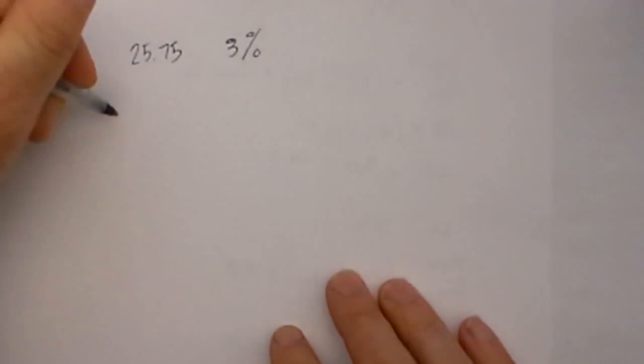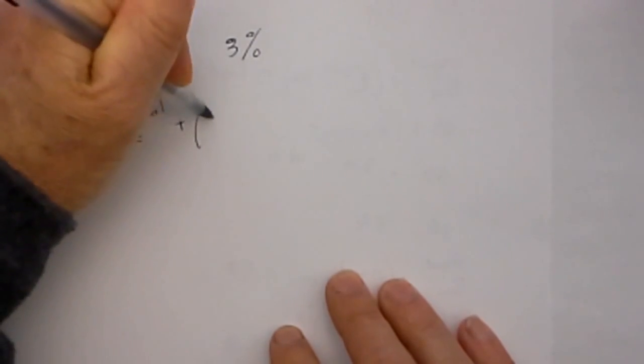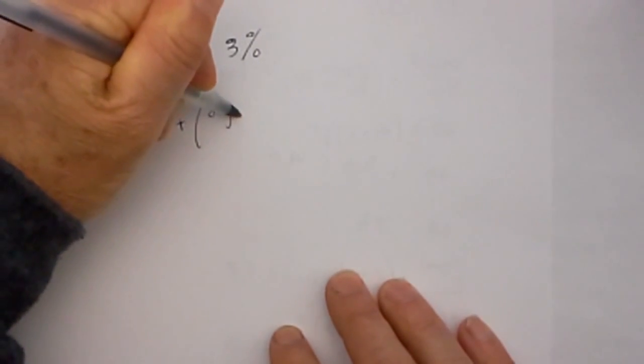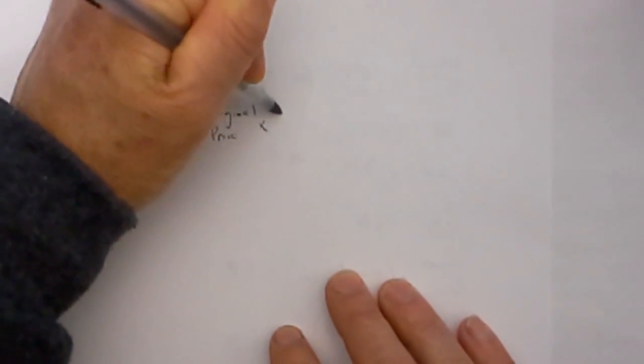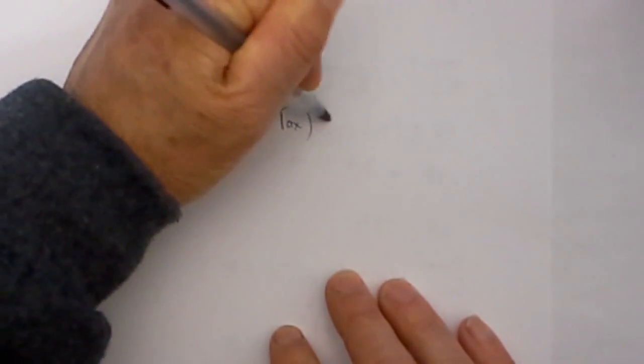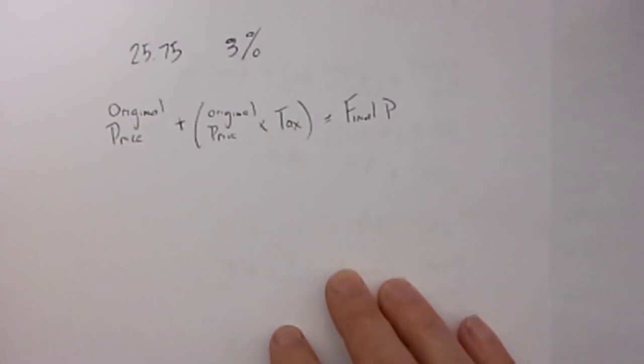So let's use our formula. We have original price plus, because you add sales tax, original price times the sales tax equals our final price.